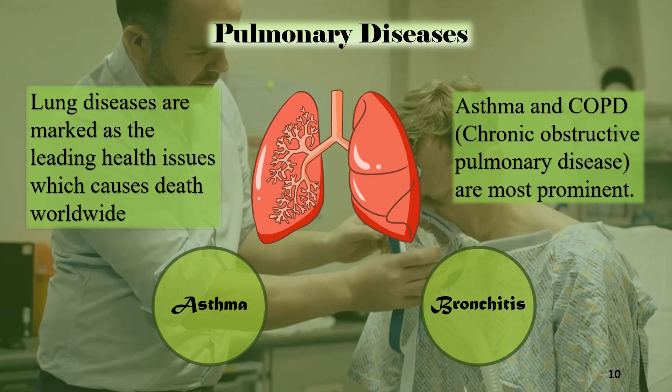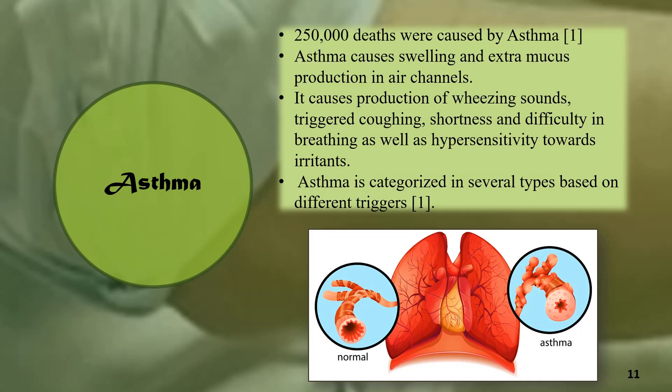As I discussed before, lung diseases are a major health issue, among which chronic obstructive pulmonary diseases and asthma are the most prominent. My research is particularly focusing on asthma and bronchitis, which is a type of COPD. Asthma causes 250,000 deaths worldwide. It is an allergic kind of disease which causes swelling, extra mucus production in the bronchioles, leading to triggered coughing, shortness of breath, and generates wheezing sound during respiration. It can be further categorized according to different triggers.